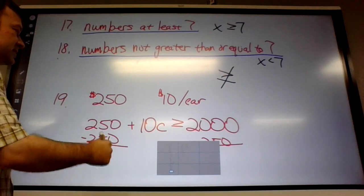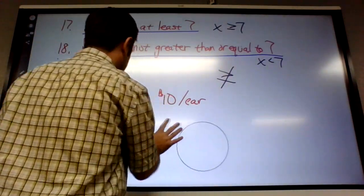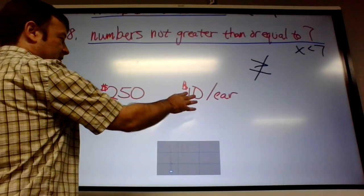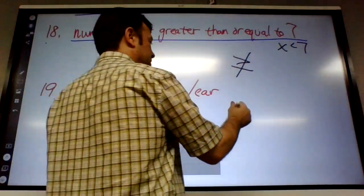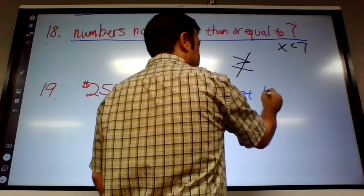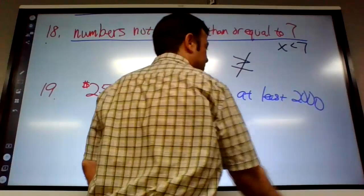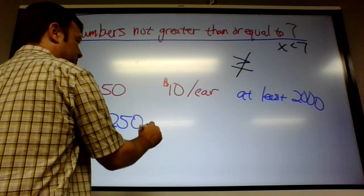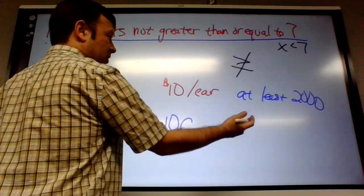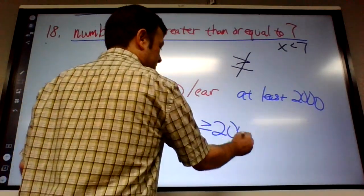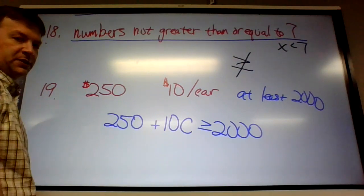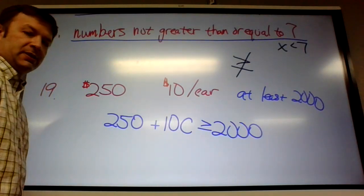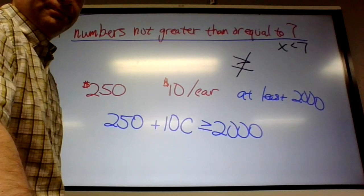And I kind of ran out of time, but basically I'm going to put a word problem on there, something like this. Like your class is raising money for the trip, you already have $250, plus you're going to do a car wash for $10 per car. And let's say you want at least $2,000 for your trip. So, you would write $250, plus $10, times the number of cars. And if you want at least $2,000, that means you want greater than or equal to $2,000. And just solve that for C. I'll probably put a problem similar to that on the test for the word problem. That's it.